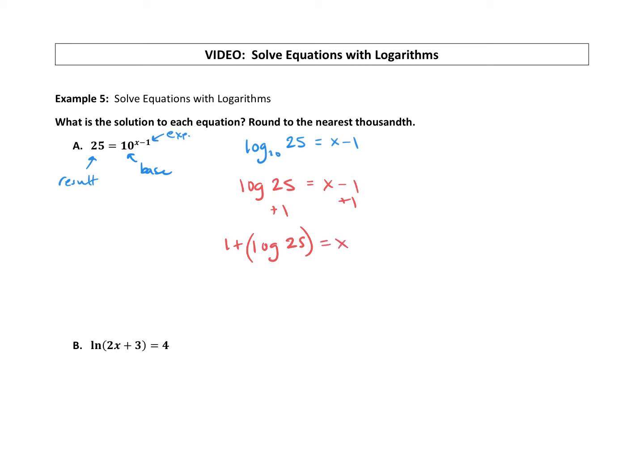That's equal to x. So if you were to type in 1 plus log of 25, you're going to get x is about equal to—nearest thousandth, that's three decimal places—we get about 2.398. Alright, we just solved an equation using logs. How cool is that?